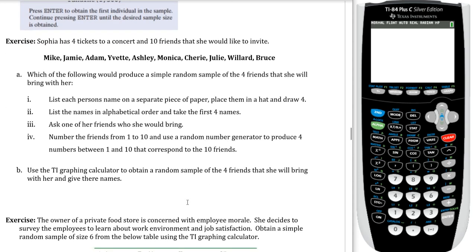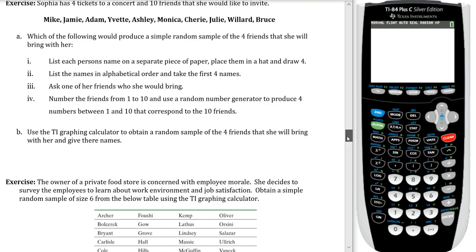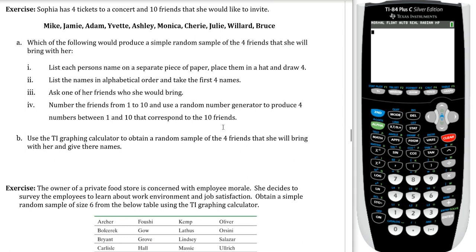There's a printout on the notes here that describe how to go through, but I'm going to go through this in the example. Sophia has 4 tickets to a concert and 10 friends that she would like to invite. The 10 friends are listed here, so we would say that this is your frame. Of these 10 friends, she wants to select 4 of them for the tickets. Which of the following would produce a simple random sample of the 4 friends that she will bring with her?